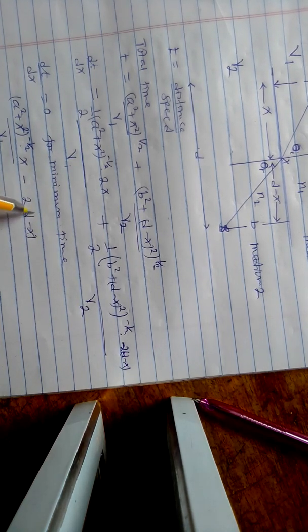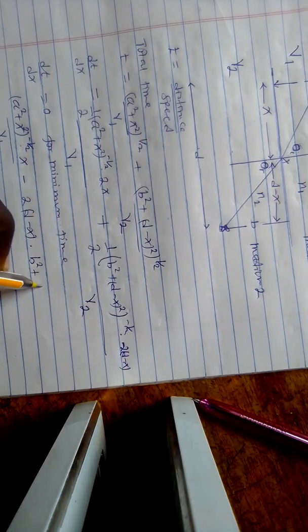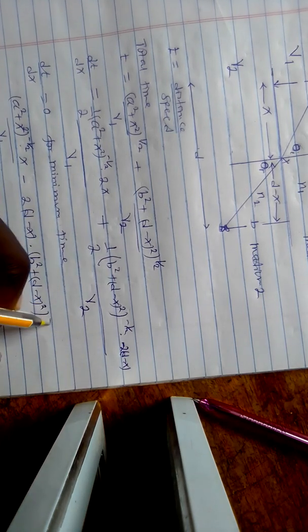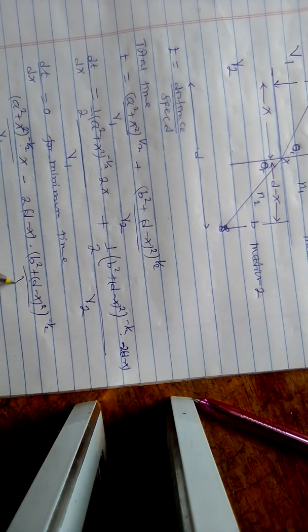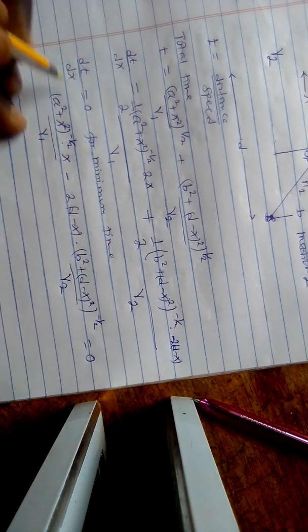(D minus X) over the square root of B squared plus (D minus X) squared times V2, equals zero, because we have set dT/dx to zero.